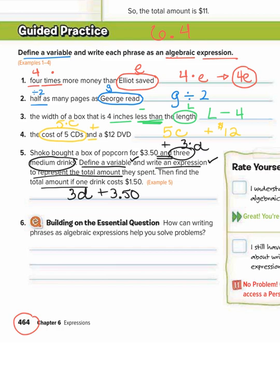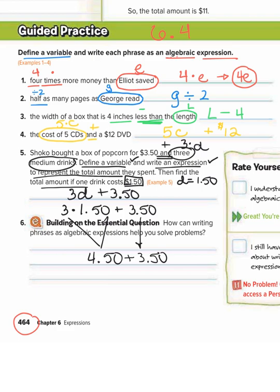Now, find the total amount if one drink is $1.50. So they're basically saying, evaluate if D was 1.50. So we would do 3 times 1.50 plus 3.50. So order of operations, we have to do 3 times 1.50 first. That's $4.50 plus $3.50. Bring this down. So $4.50 plus $3.50, that equals $8 total. So we answered all parts of the question.